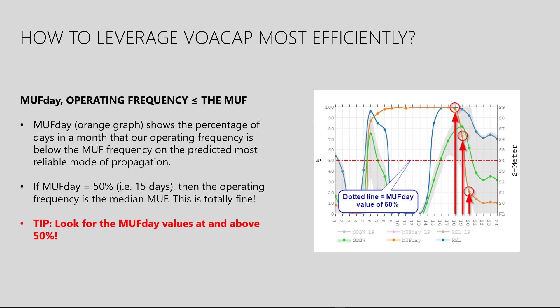Last but not least, we need to look at the orange MUF day graph. It shows the percentage value for the days in a month that the band we are operating on is at or below the median maximum usable frequency, as predicted by VOACAP. The red dotted line shows the 50%, or 15 days, mark. The scale can be seen on the left side of the image. We can see that the MUF day values are well above the 50% mark at 18 and 19 hours UTC — propagation should be good. At 20 hours UTC, the graph has dramatically dropped to around 20%, meaning propagation is expected to substantially deteriorate at that hour.